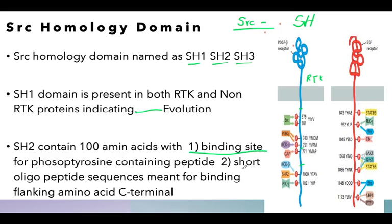The second component of the SH2 domain is a short oligopeptide sequence meant for binding of a flanking amino acid terminal. So SH2 has a binding affinity for two regions: first, the binding site of phosphotyrosine-containing peptides — those protein components that should be phosphorylated by receptor tyrosine kinase — and second, the binding affinity for a flanking amino acid terminal. These two components are both necessary within the SH2 domain.